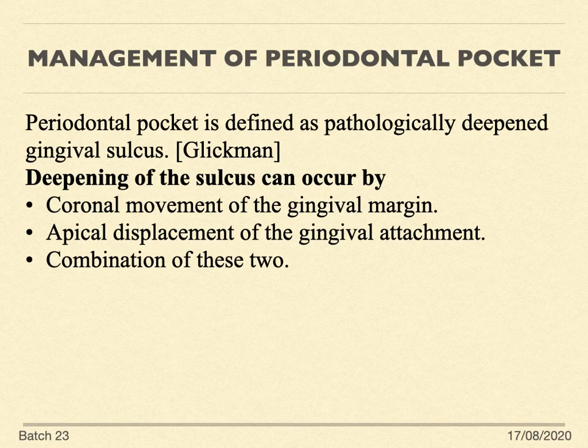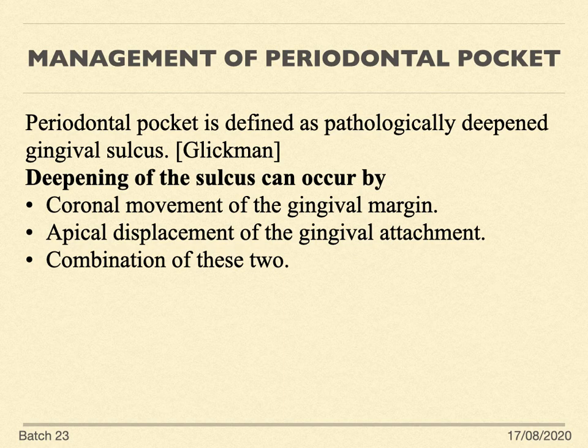Management of periodontal pocket. A periodontal pocket is basically defined as a pathological deepening of the gingival sulcus. The deepening of the sulcus can occur either by coronal movement of the gingival margin, apical movement of the gingival attachment, or a combination of these two together. So it may be a pseudo pocket, true pocket, or combined pseudo and true pocket.